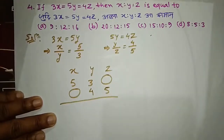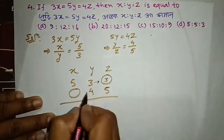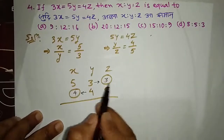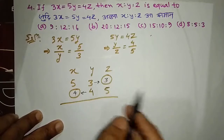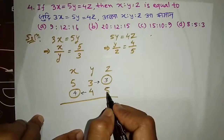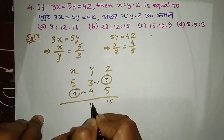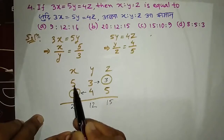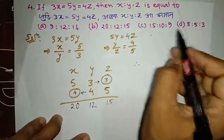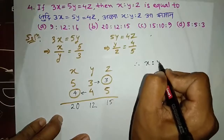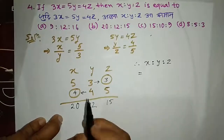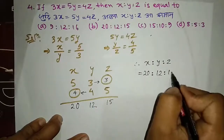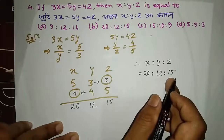If you have 3, then 3, then 4, then 3. The question is, we have to do the math. We get 5 into 3 is 15, and 4 into 3 is 12, and 4 into 5 is 20. We will get math. x is to y is to z. x is about 20, y is about 12, z is about 15. So x to y to z is 20 to 12 to 15.